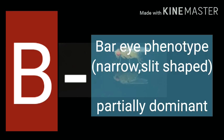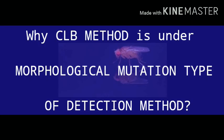B stands for the presence of a partially dominant character — the bar eye phenotype. Because Drosophila have a compound and round eye shape, but in some cases they have the bar shape, meaning a narrow or slit-shaped eye. It is also a dominant character, but it is partially dominant. This is the reason why he detects the mutation through the morphological detection method — because it uses the eye shape as the morphological character.